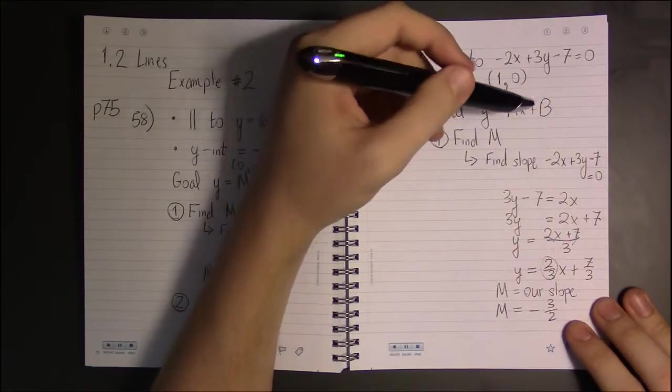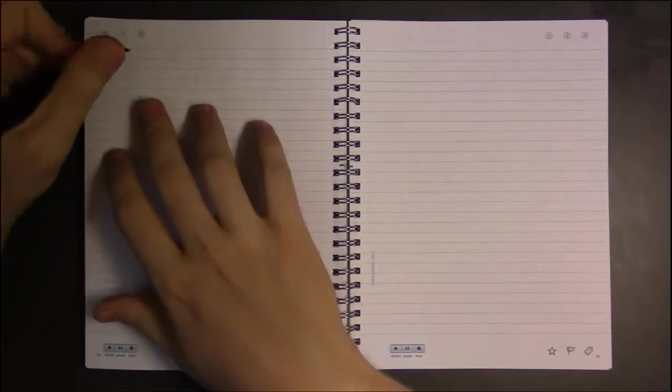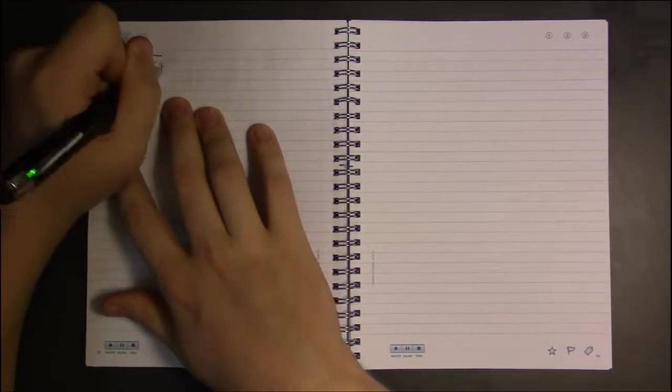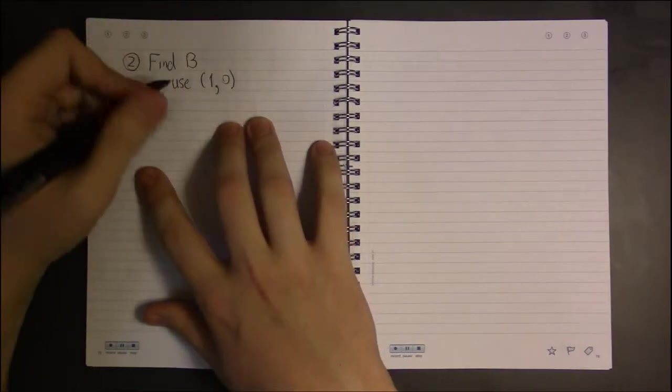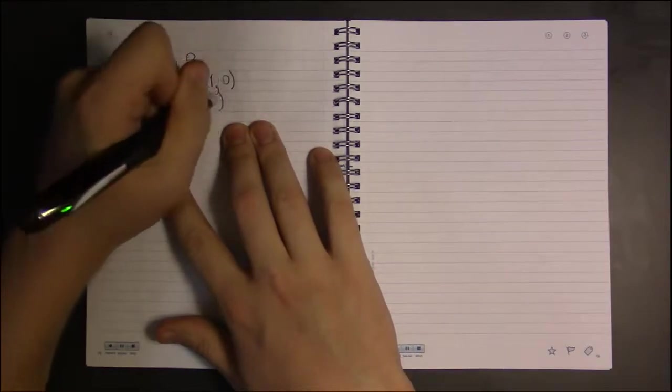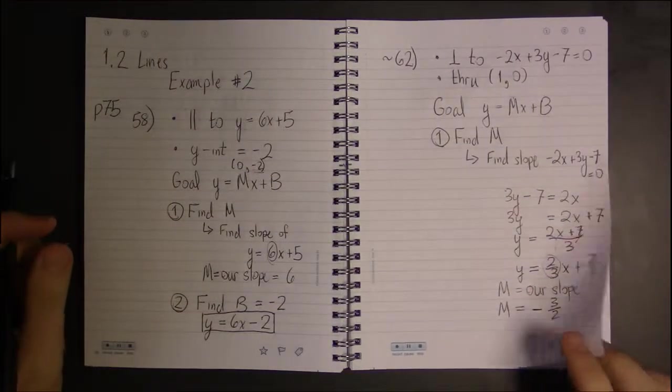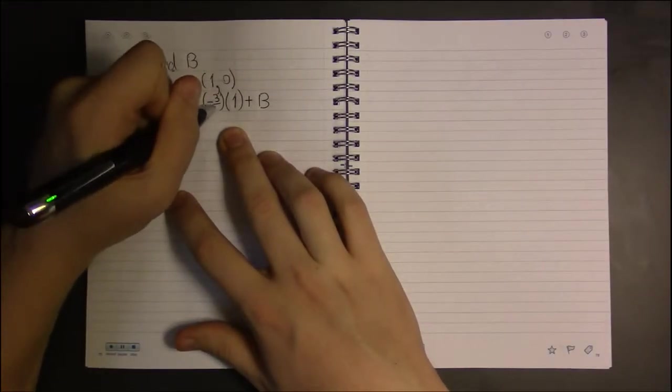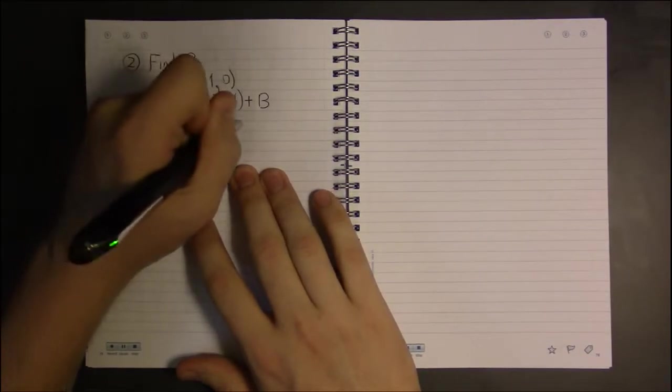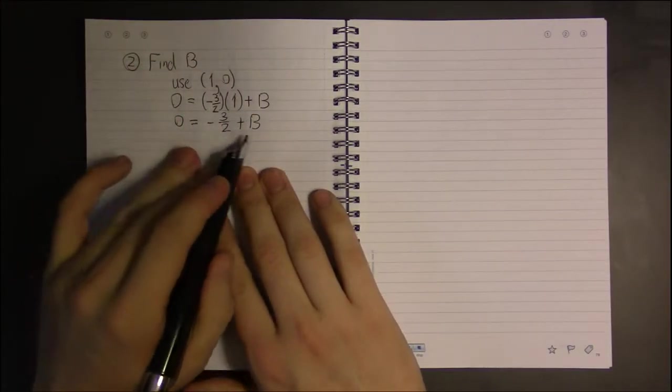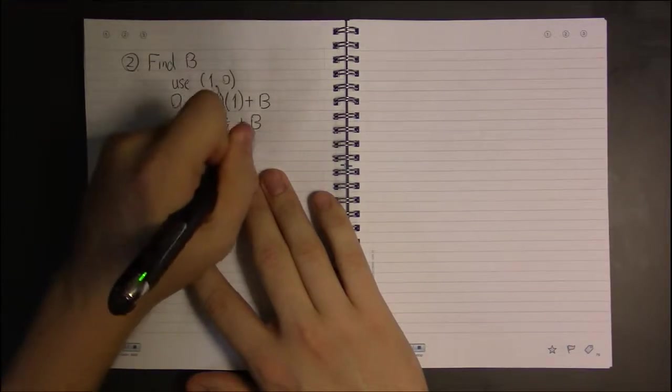We found m. The only other piece of information we need right now is b, and we'll use the point to do so. So we plug 0 in for y, 1 in for x, and b is what we're trying to solve for. Our slope is minus 3 halves. So 1 times anything is just itself - multiplying by 1 doesn't change anything. So we have minus 3 halves plus b equals 0. Add 3 halves to both sides, and we find b is 3 halves.